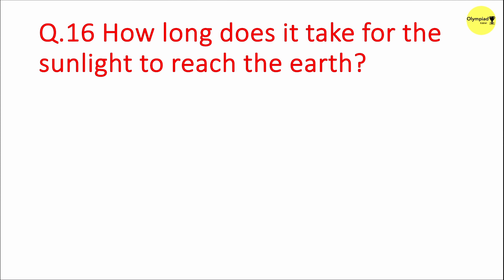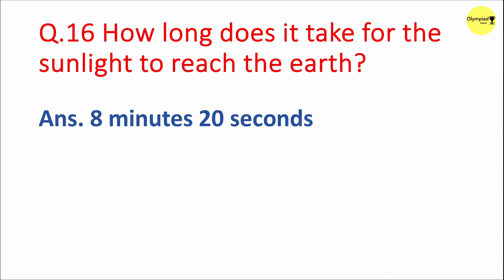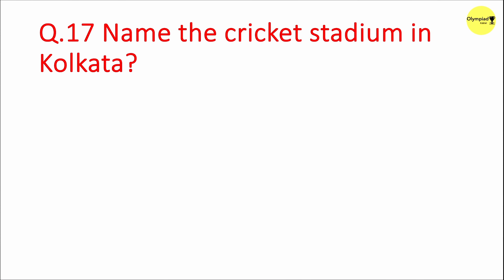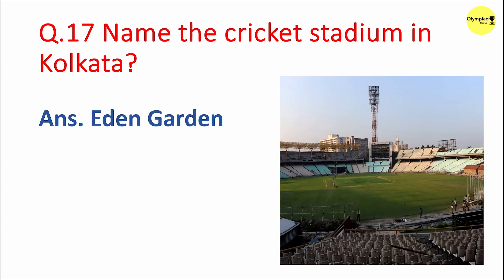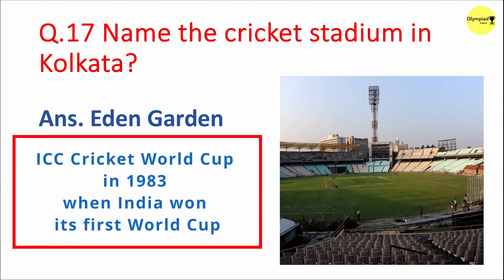Question 16: How long does it take for sunlight to reach the Earth? Answer: 8 minutes 20 seconds. Question 17: Name the cricket stadium in Kolkata. Answer: Eden Gardens.